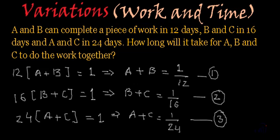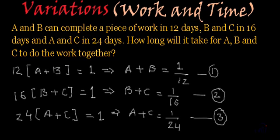Right? So we have three equations. First is A plus B is equal to 1 by 12. Second is B plus C is equal to 1 by 16. And third is A plus C is equal to 1 by 24. And what we have to find? The question is how long will it take for A, B and C to do the work together? That means we have to find how much time will be required if A, B and C work together. Right? So we have got three equations and based on three equations we have to find the solution.